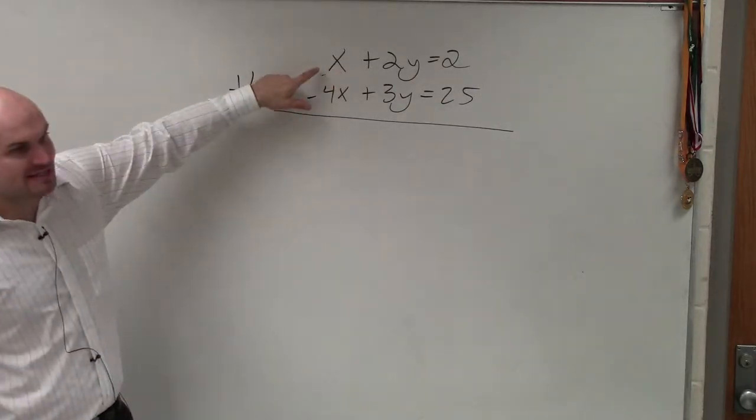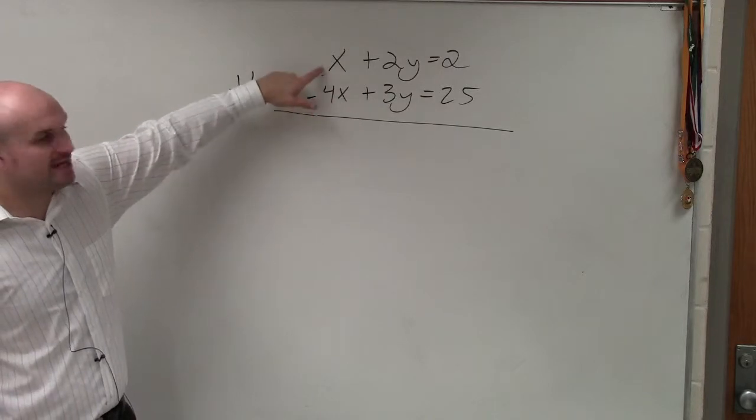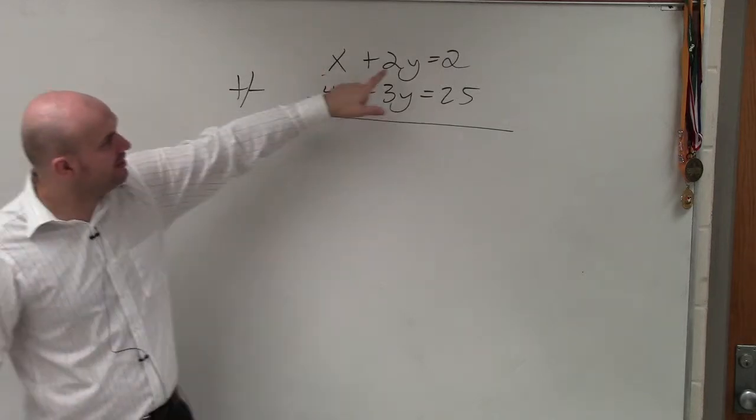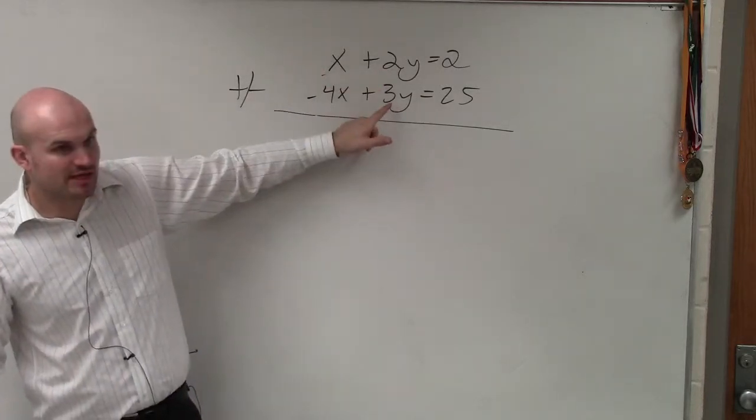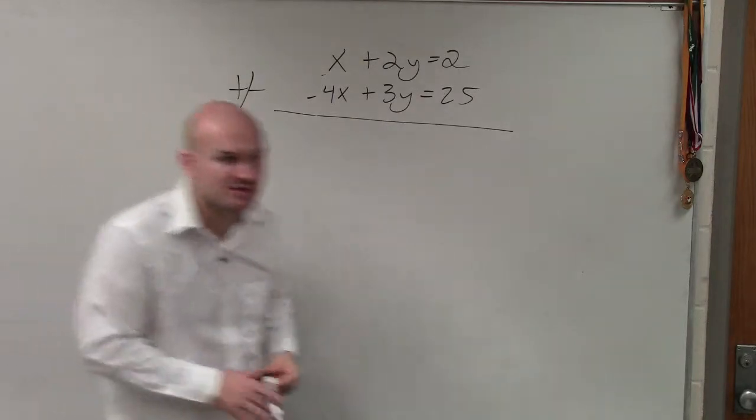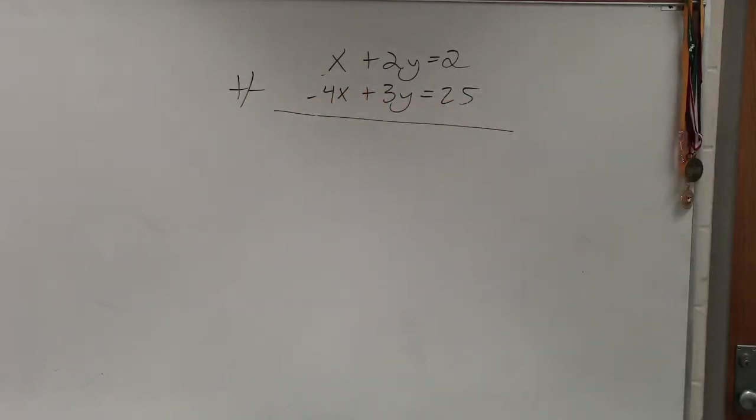So you look at the coefficients of the x variables. And you see here has 1, here's negative 4. Here is 2, here is 3. So they don't have the same coefficients. So when we're trying to identify how to eliminate the variable...